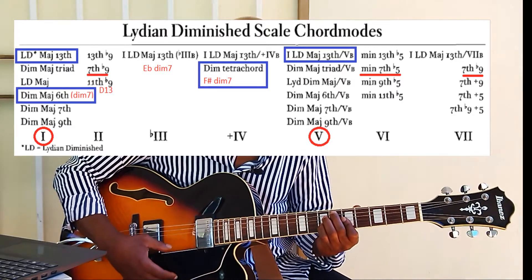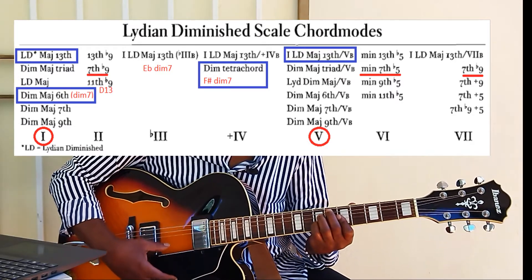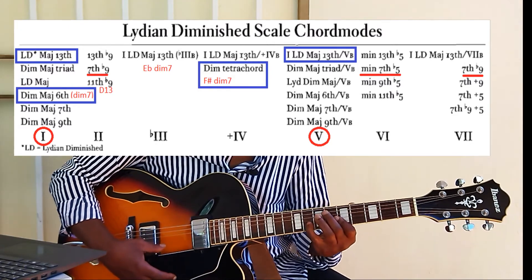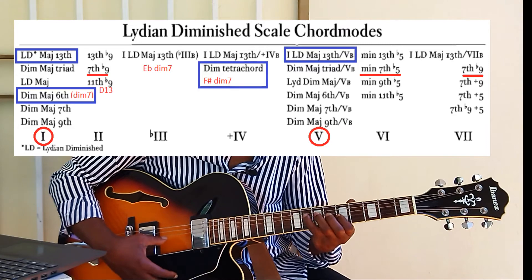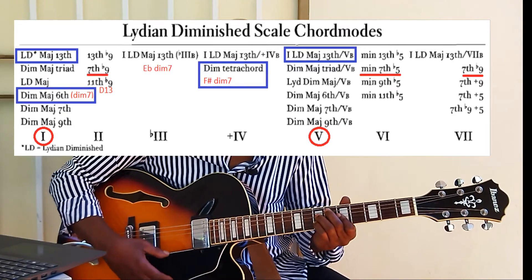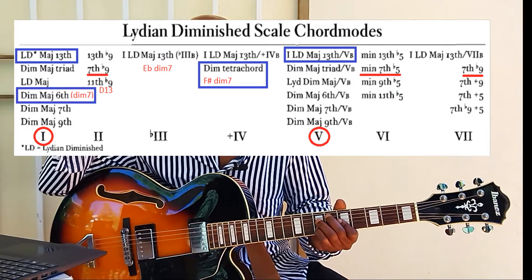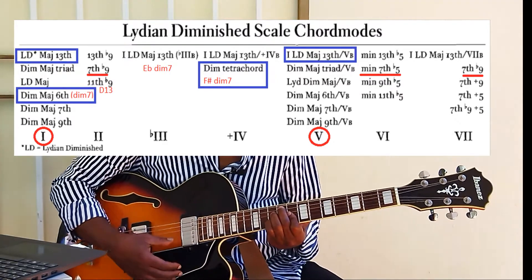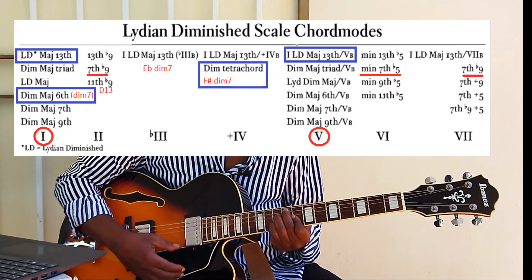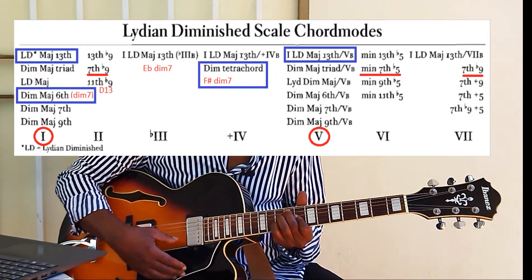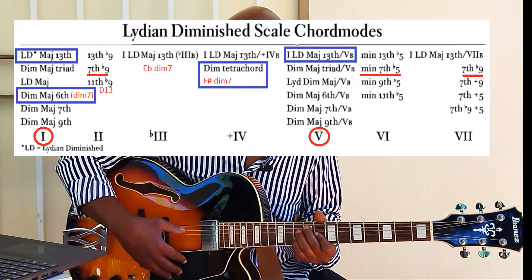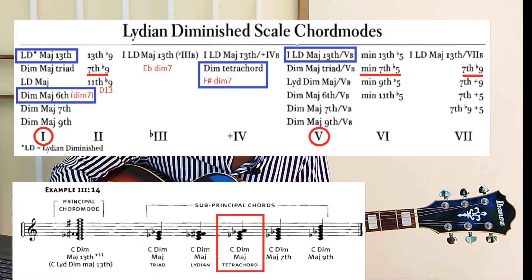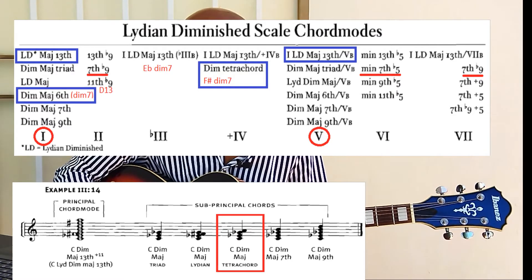The third degree is E flat — the minor seven. The fourth degree is F sharp — the minor seven. When you see the diminished third chord, as we've said before, it's simply this — we've talked about it before.